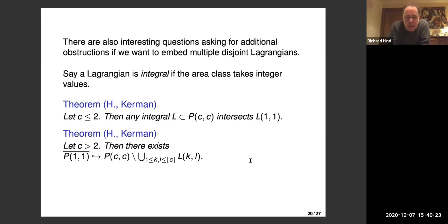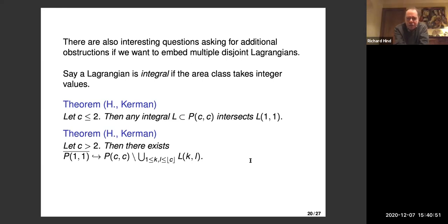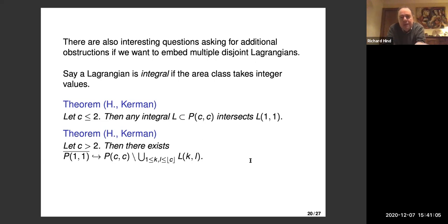Two results. If we take a cube of capacity less than or equal to two, as long as C is bigger than one, the standard monotone product torus sits inside there by inclusion. The claim is you can't get another Lagrangian torus in there with the same area class — in fact you can't even get one with integral area class. It follows from the previous results that the only integral Lagrangian tori contained there have to be monotone. The theorem is that any monotone Lagrangian torus in this cube has to intersect just the standard product, if C is less than two.